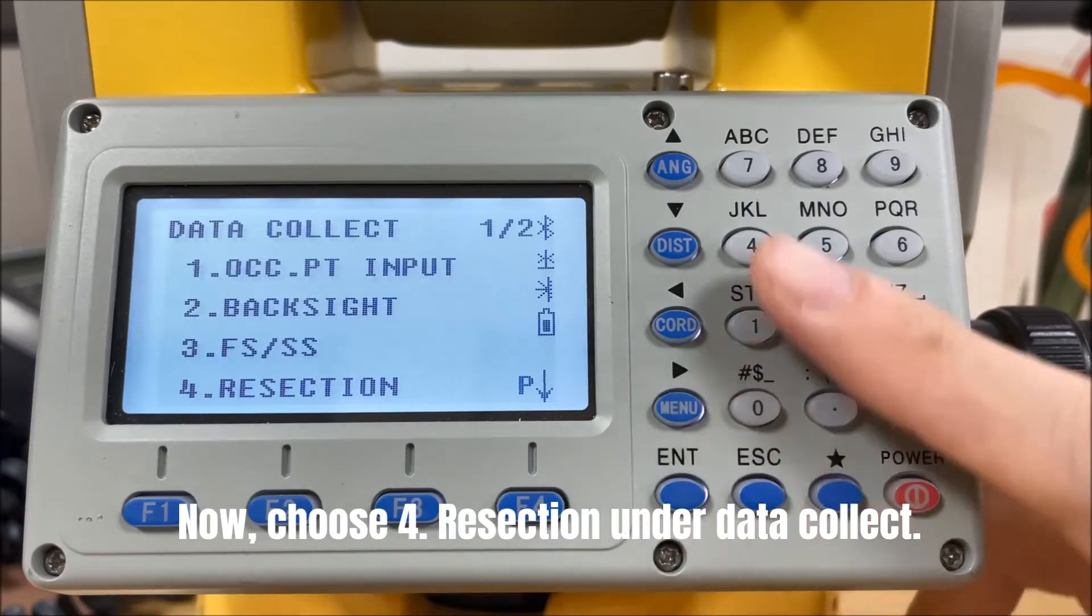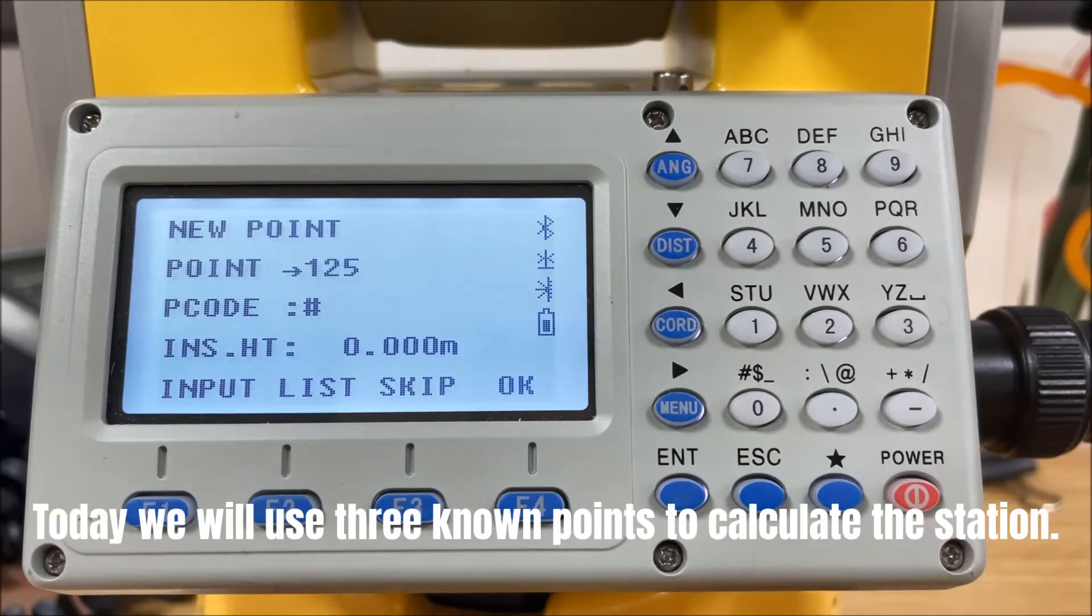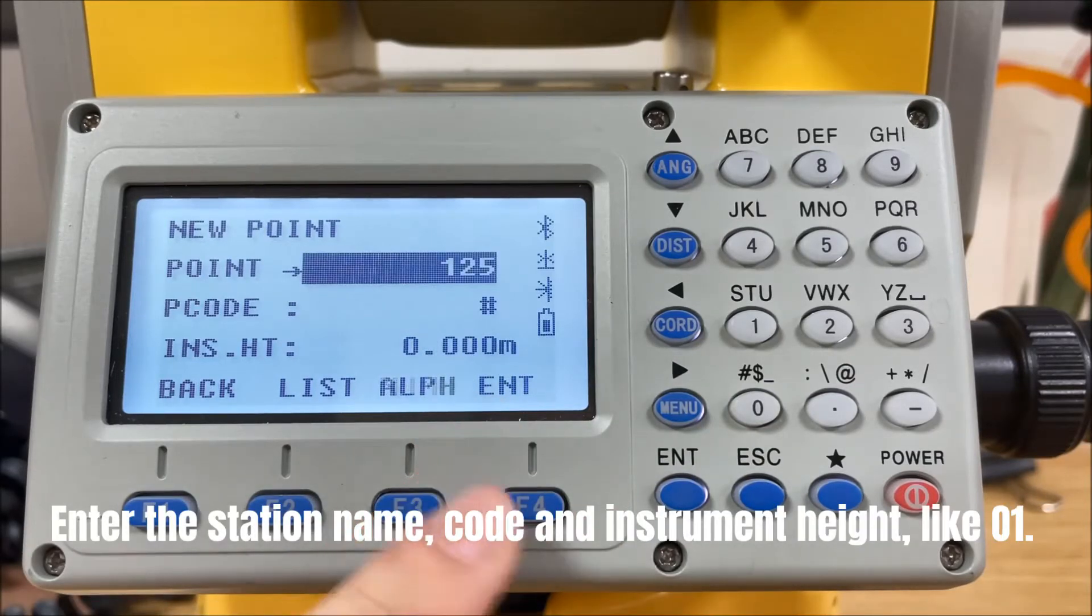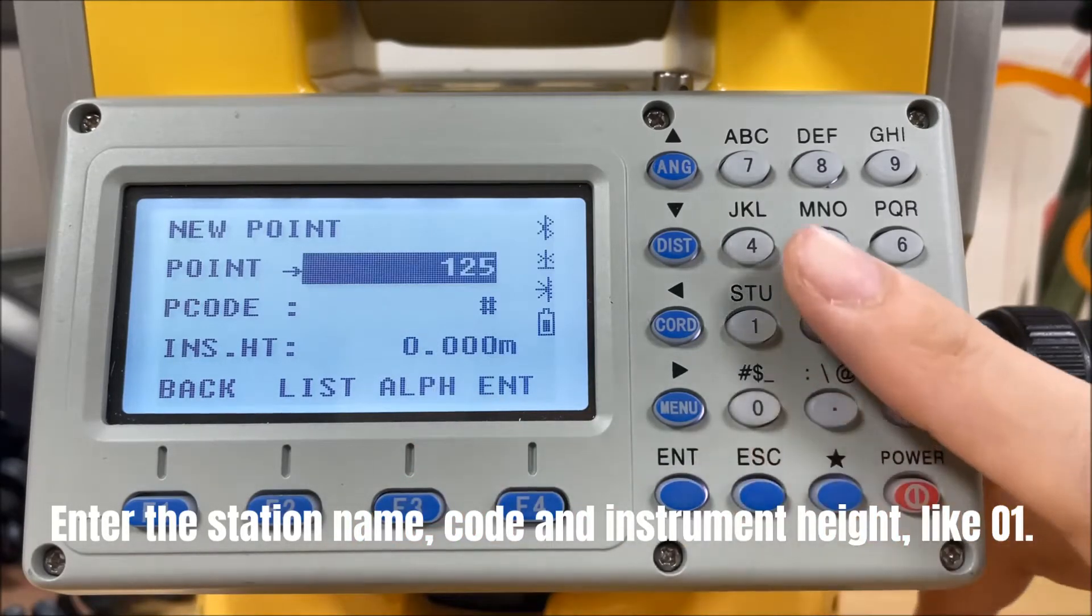Choose the resection under data collect. Today we will use 3 known points to calculate the station. Enter the station name, code and instrument height, like 01.